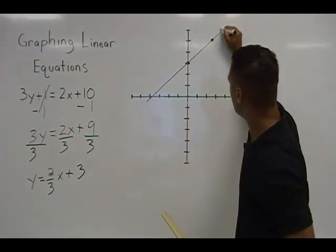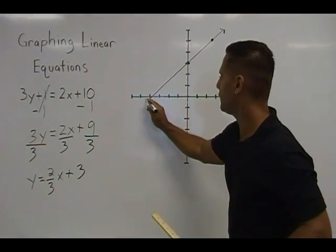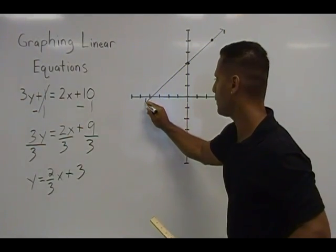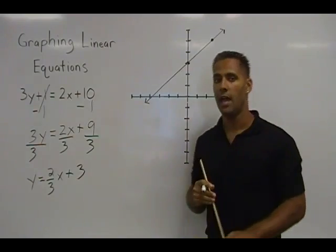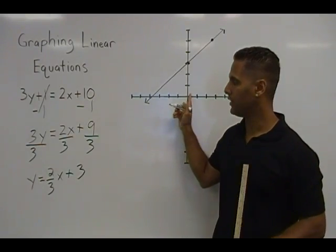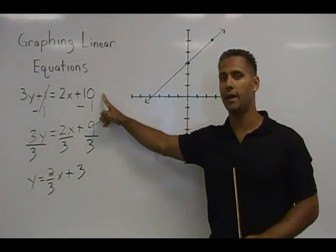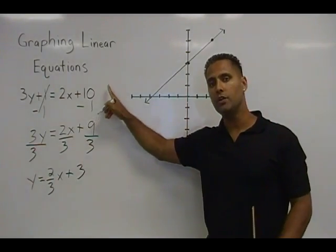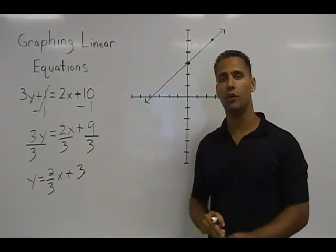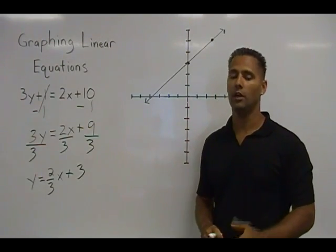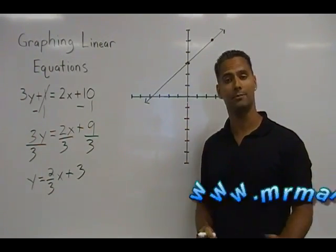We are going to draw an arrow on either end because this line goes on for eternity. And this is a line which represents the original equation that we had. But before we graphed that line, we had to get it into slope intercept format first in order to make the graphing easy to do.